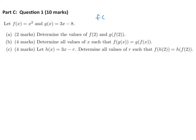f(2): plugging into x squared gives 2 squared, which is 4. g(f(2)) — well, f(2) we just figured out was 4, so that's really just g(4). g(4) plugged into the formula would be 3 times 4 minus 8, which is 12 minus 8, which is 4.